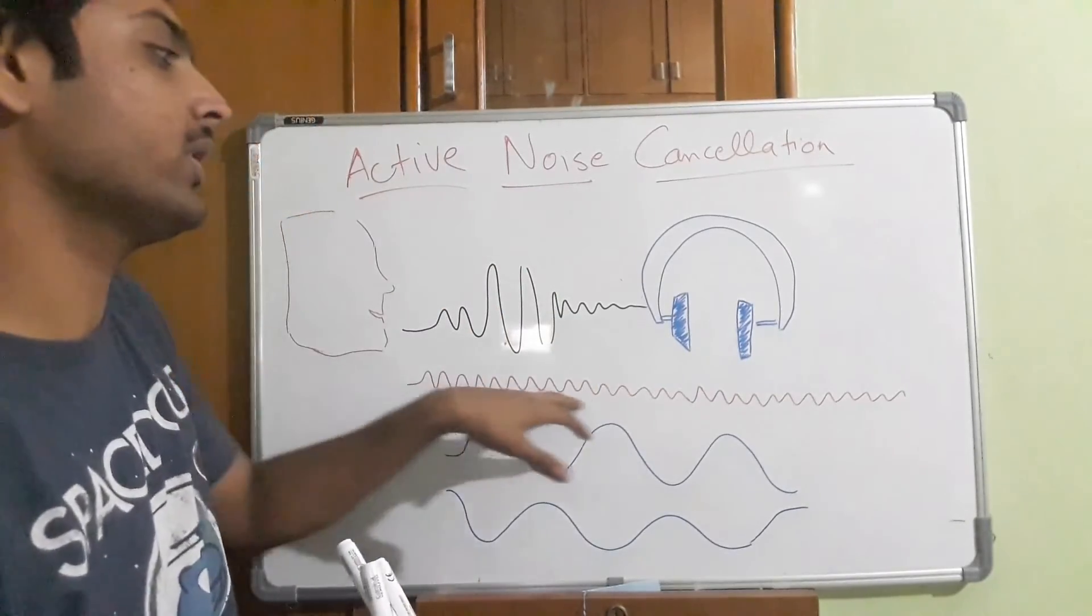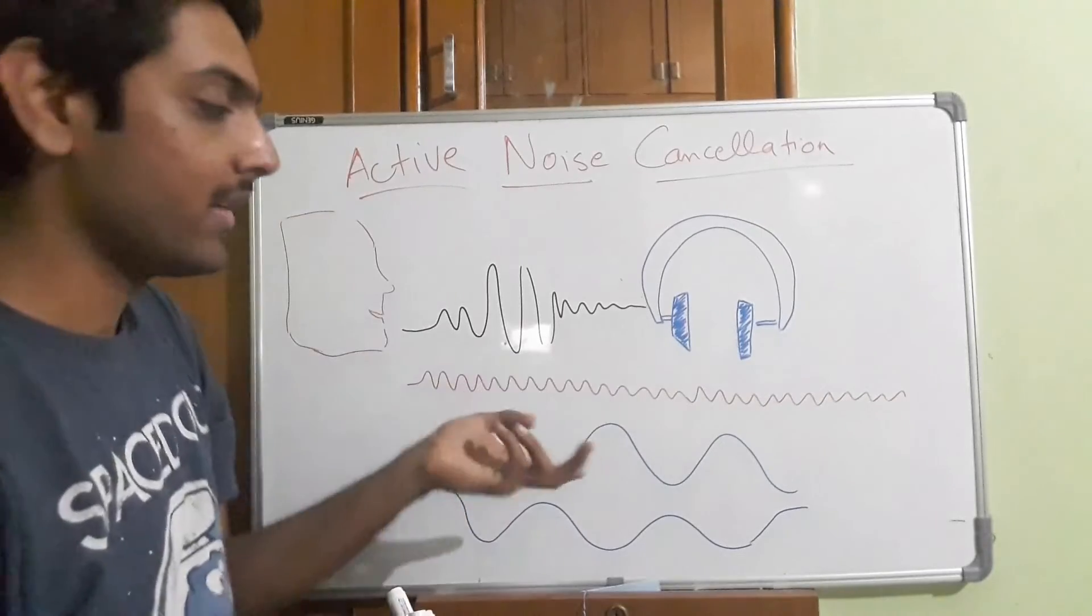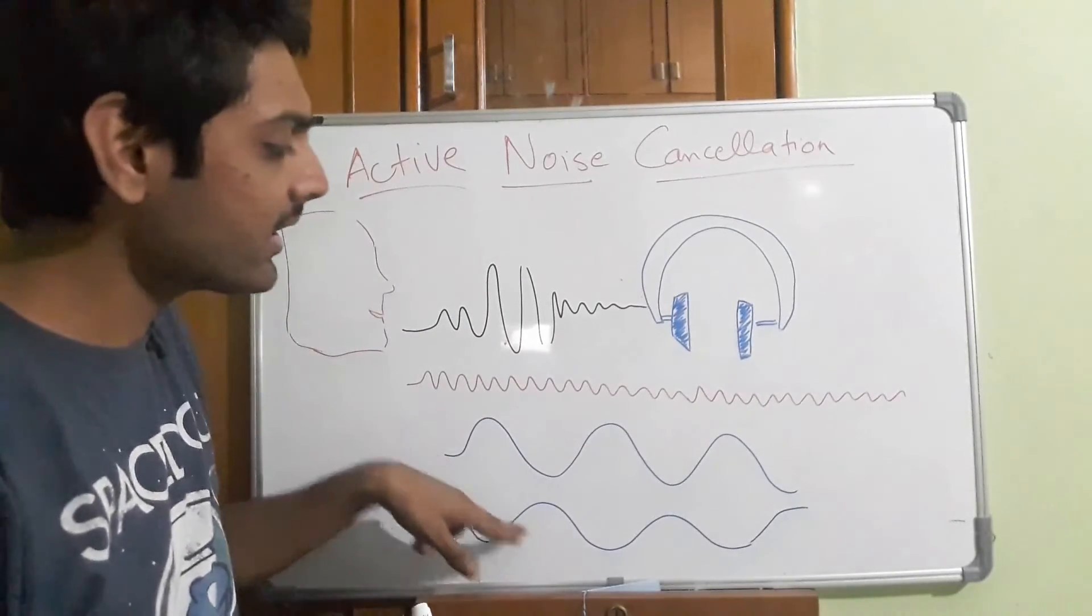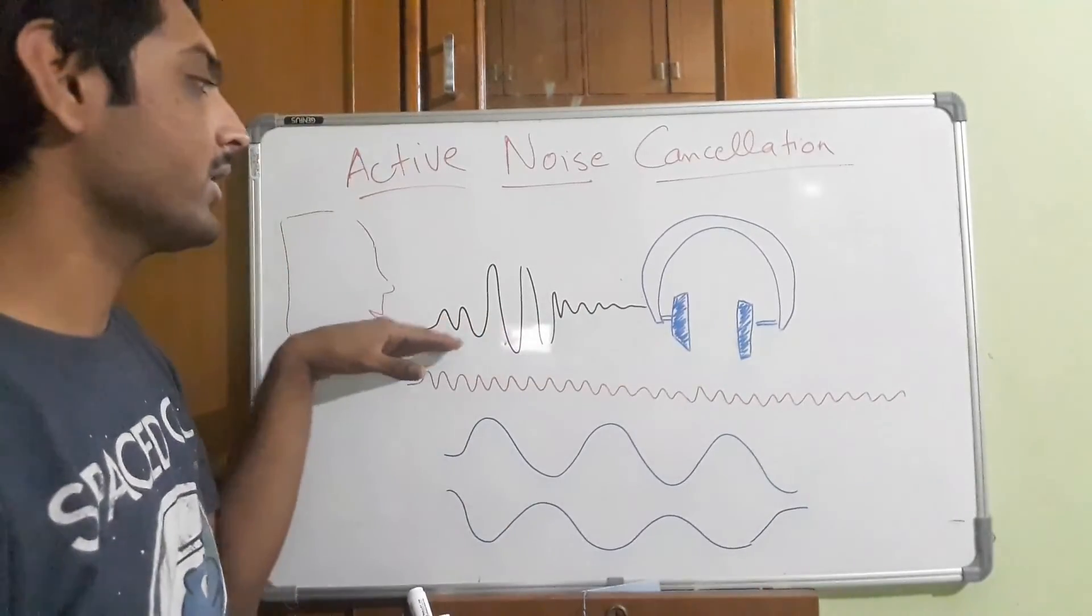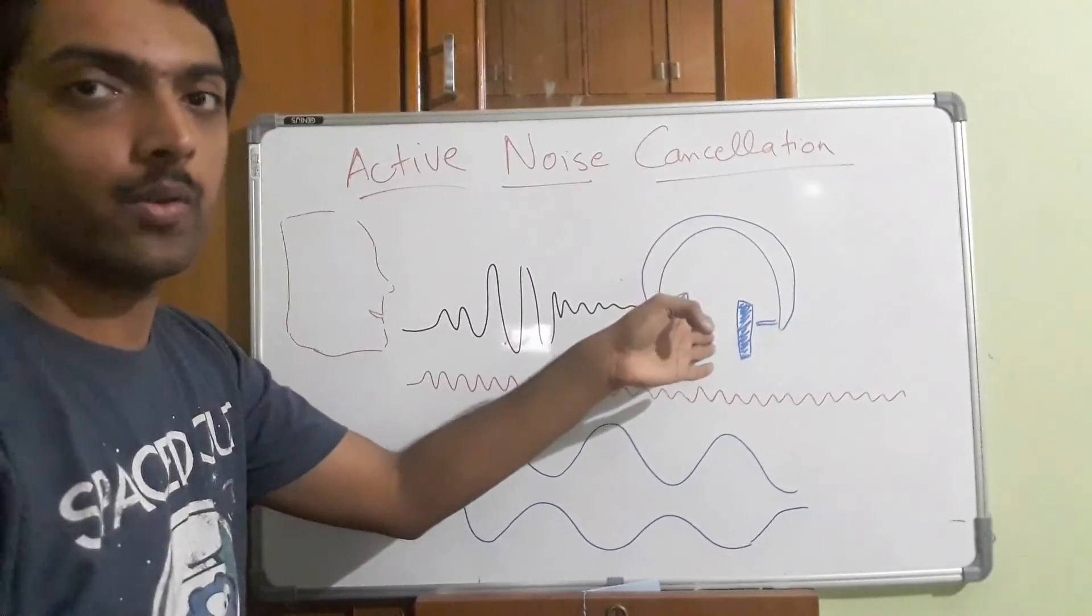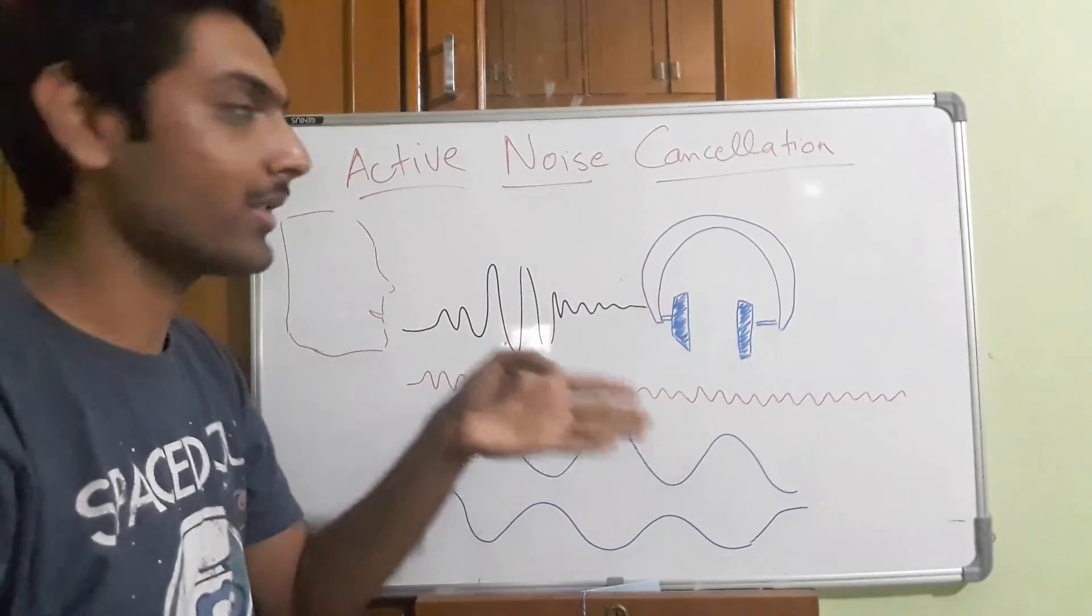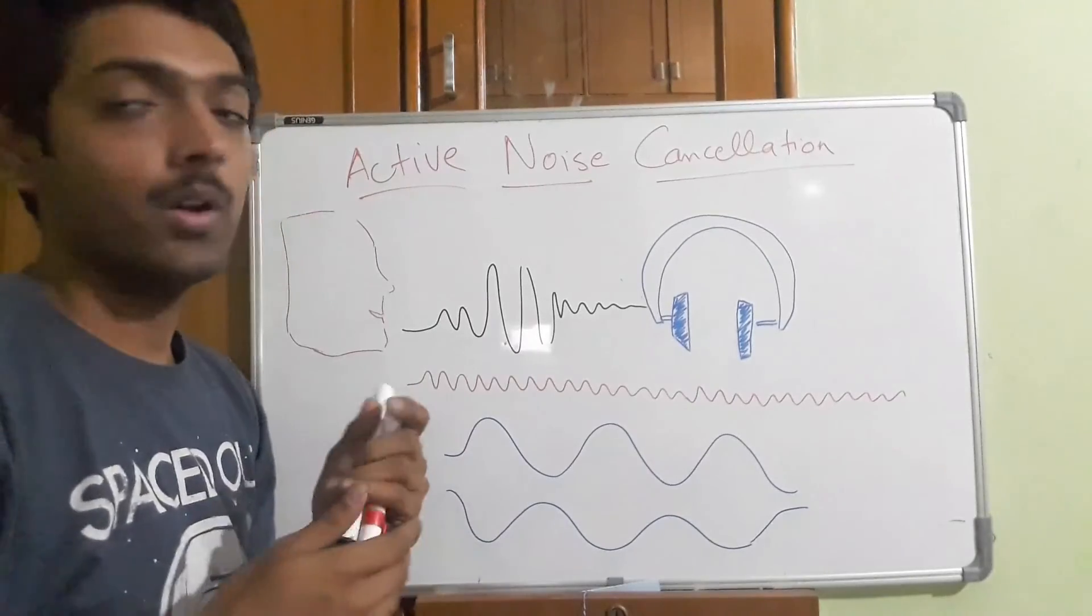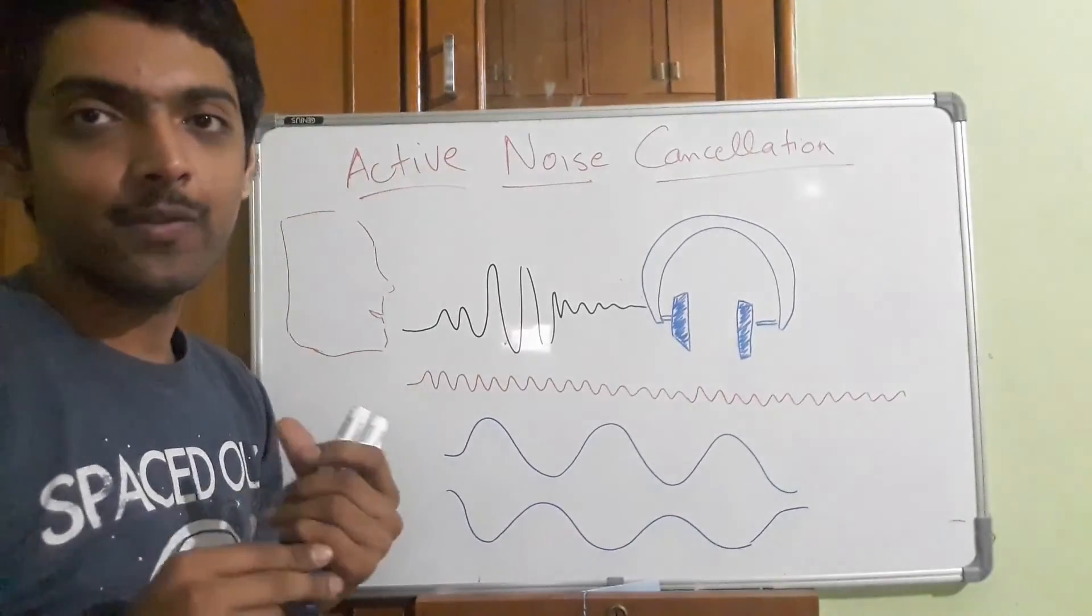We know the frequency where the noise is working and negate it with exact 180 degree phase shift noise. Everything becomes silent and whatever you're listening to in the headphones will be clear because of active noise cancellation. This is how active noise cancellation works. Thank you for watching.